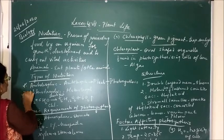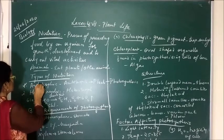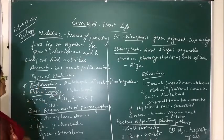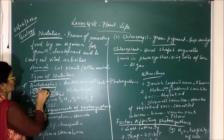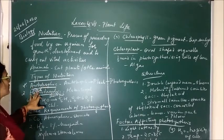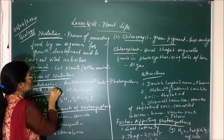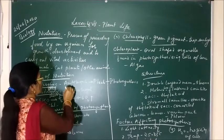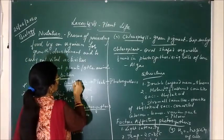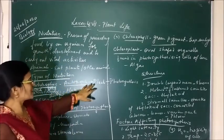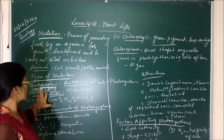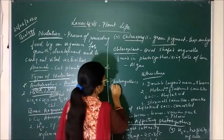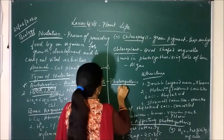Nutrition is divided into two types. The first is autotrophic nutrition and the second is heterotrophic nutrition. Autotrophic nutrition — 'auto' means self and 'troph' means feed. Those organisms which produce their own food are called autotrophs. Plants mostly show autotrophic nutrition and are called producers because they produce their own food by the process of photosynthesis.